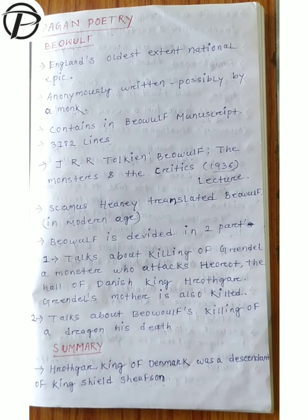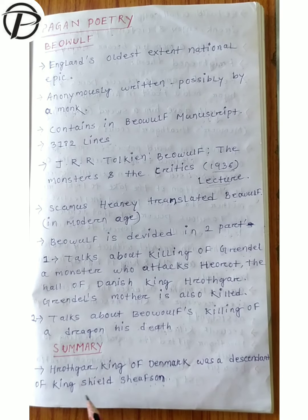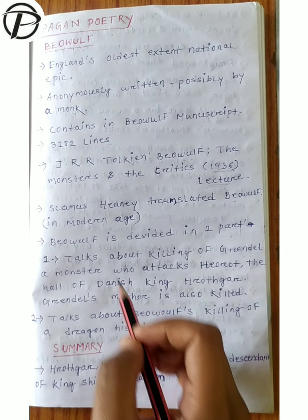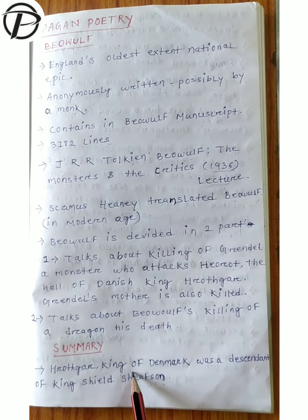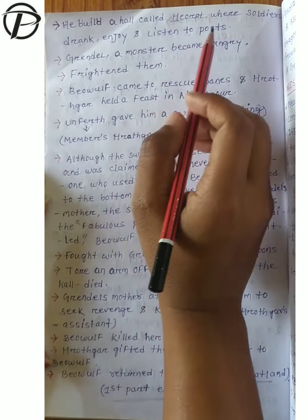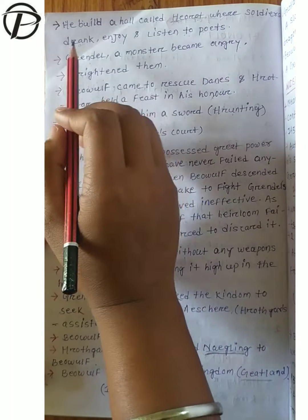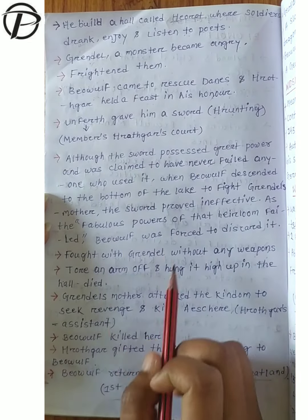Since it is so important, let us also look at a brief summary. The summary tells us that Hrothgar, who is the king of Denmark, was a descendant of king Scyld Scefing. Hrothgar built a hall called Heorot, where soldiers would drink, enjoy, and listen to poets.